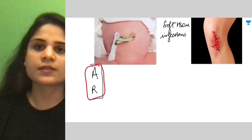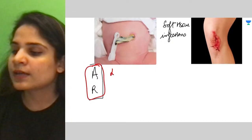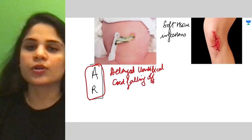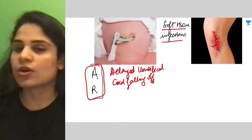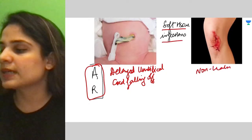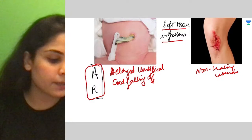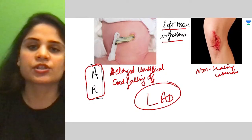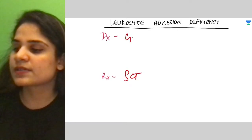Last flashcard: an autosomal recessive disorder with a very specific presentation — delayed umbilical cord separation (normally falls off by two to three weeks, but delayed here), recurrent soft tissue infections, and non-healing wounds. This is Leukocyte Adhesion Deficiency (LAD). Treatment is stem cell transplant and diagnosis is by genetic testing.